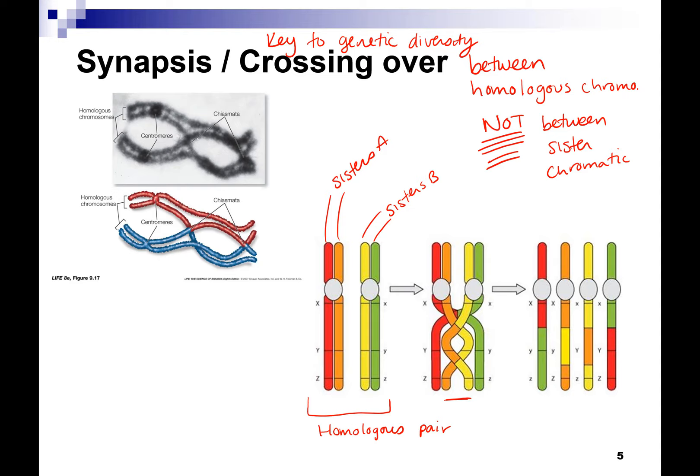Even though you may eventually turn into your mom or dad — trust me, it happens — you won't be exactly like them. We have a homologous pair, an orange and a yellow crossing over. What they do is chromosomes break and rejoin and you exchange genetic information. This can happen all over and on both of the homologous chromosomes — so the red and green ones also exchange.